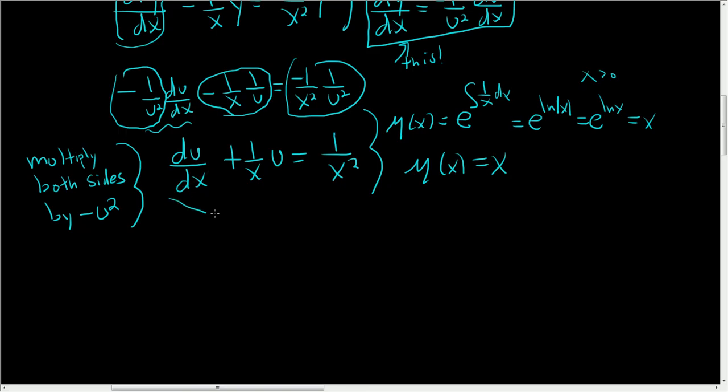Multiply everything by x. So we get x du/dx plus x times 1 over x is 1. So we get plus u equals, and then x times 1 over x² is 1 over x. Very, very nice.